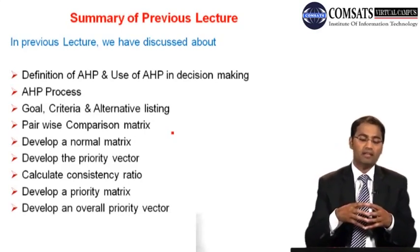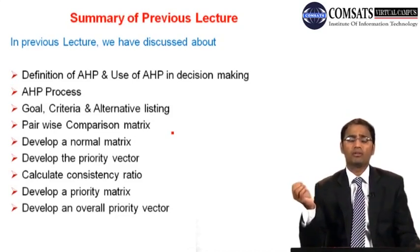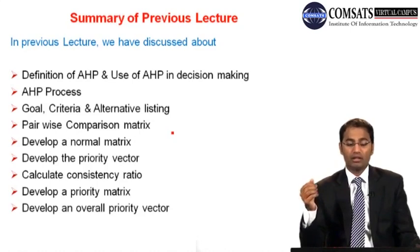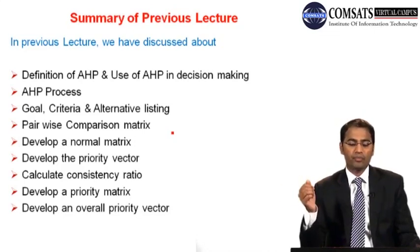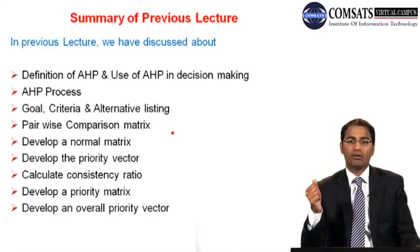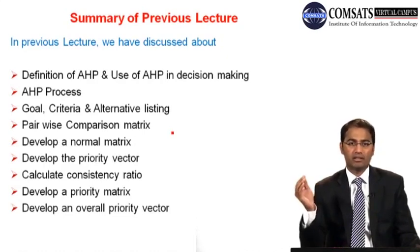For that, we use AHP — a tool or technique that is objective-based and where subjective biases are not considered. We discussed the steps involved in the AHP process. Step one is to identify and define the problem using three distinct parameters: the goal of applying AHP, the criteria on which we choose our alternative, and listing of alternatives.